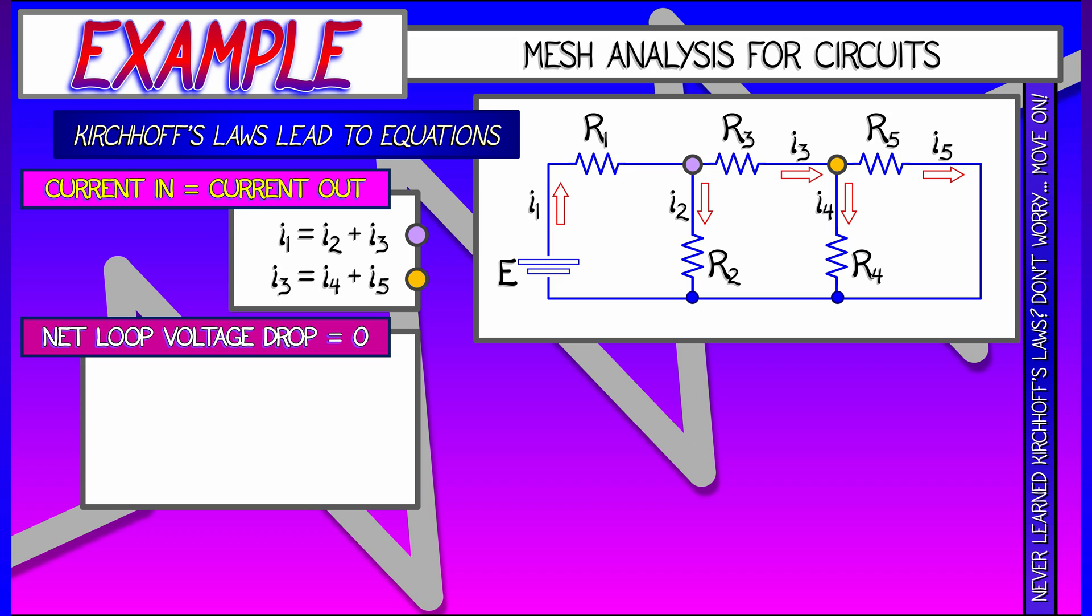This has to do with net voltage drops across loops, that those have to be zero. So pick a loop in this circuit, take a look, there's that battery guy there with that net voltage E.